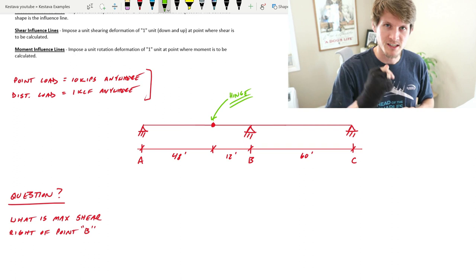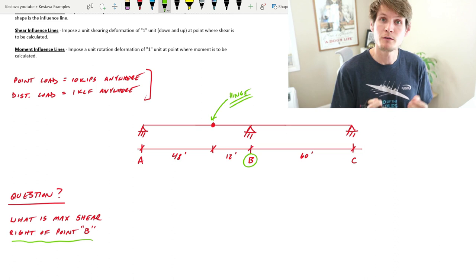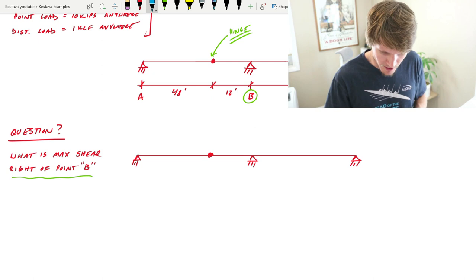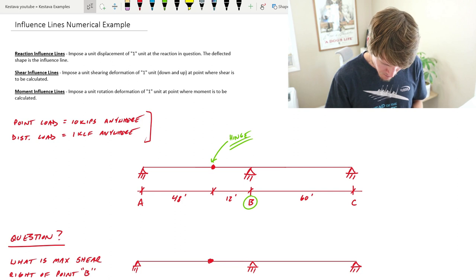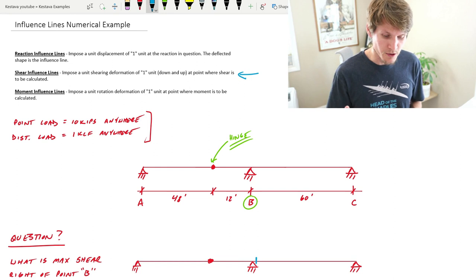As we roll through and determine what our influence line is, our question today is: what is the max shear right of point B? Since we're determining max shear, we need to draw our influence line for shear. We're going to draw it in blue. Remember, we want to cut the point of interest that we're interested in, which would be just to the right of point B.